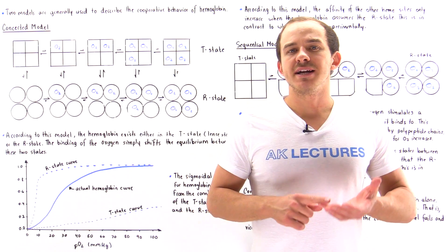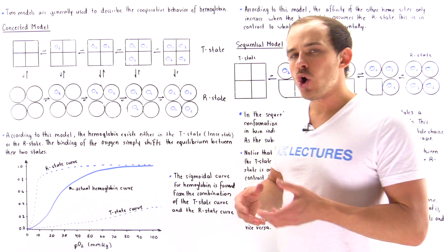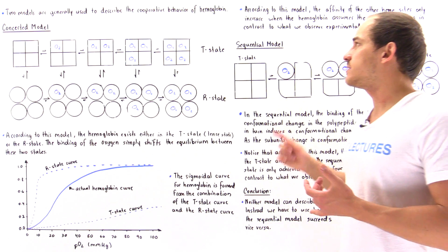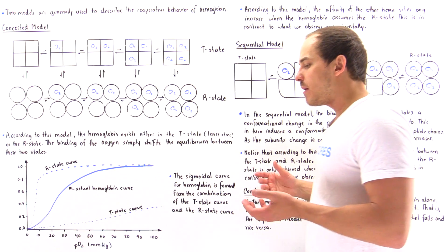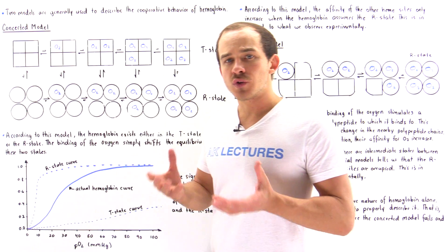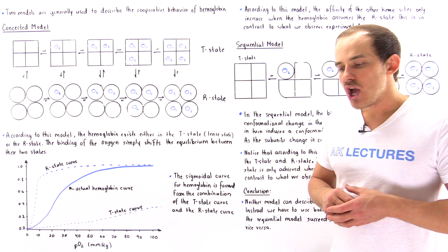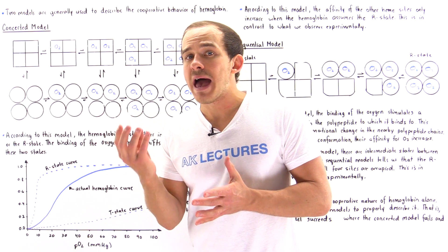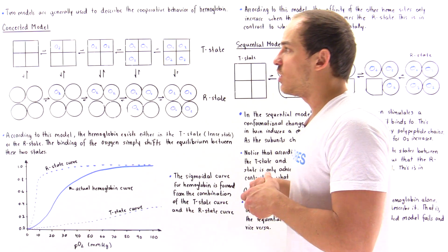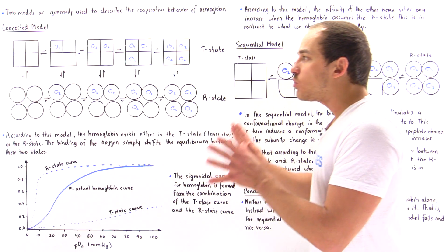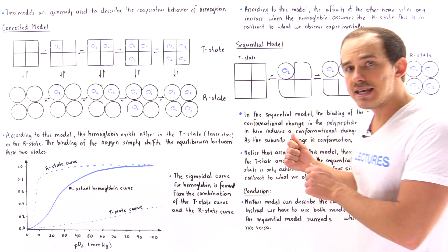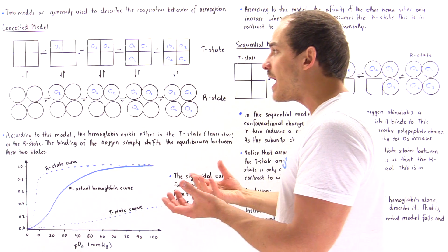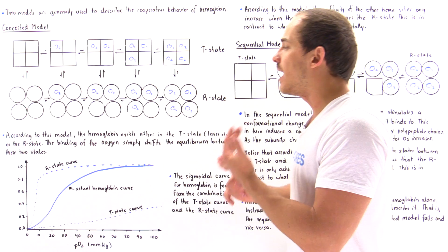In order to describe the way that hemoglobin binds oxygen in a cooperative fashion, we came up with two different models. One became known as the concerted model, and the other became known as the sequential model. As it turns out, each of these models alone does not correctly describe some aspect of the way that oxygen binds onto hemoglobin cooperatively. Where one model fails, the other succeeds — and that's exactly why we have to combine these two models.